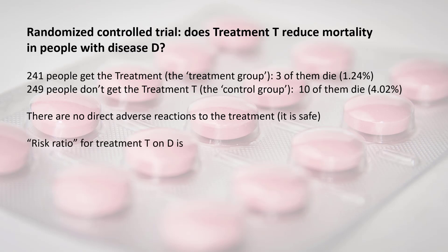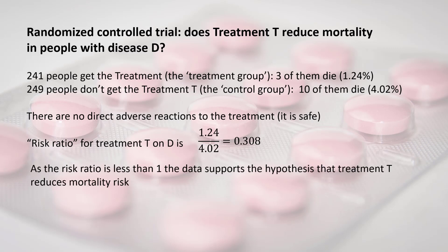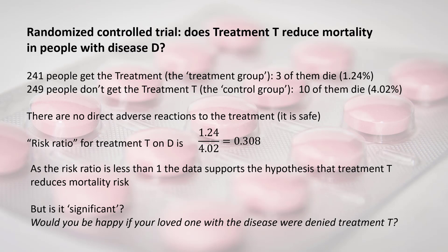The risk ratio for treatment T on disease D — which is simply the percentage of those who die with the treatment divided by the percentage of those who die without the treatment — is 0.308. Because that risk ratio is less than one, the data supports the hypothesis that treatment T reduces mortality risk, since the mortality rate in the treatment group is lower than in the control group. But the question is: is it sufficiently statistically significant to recommend use of the treatment?